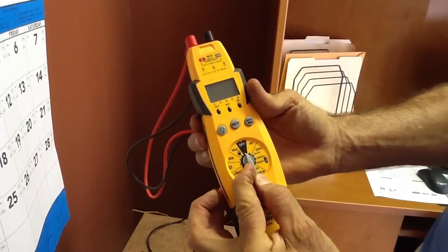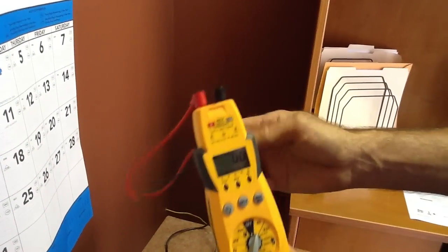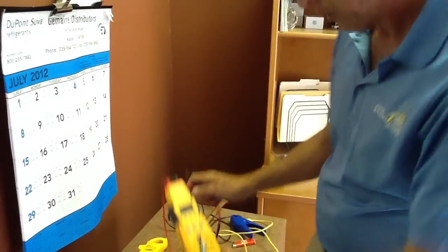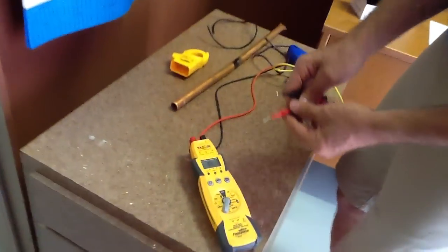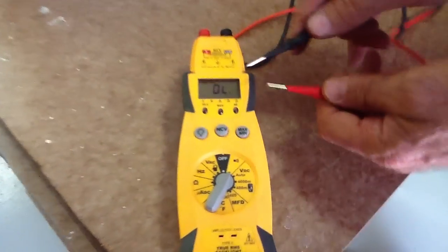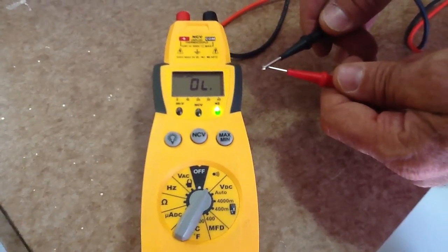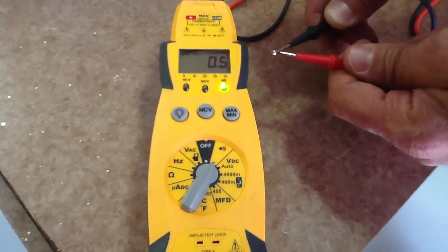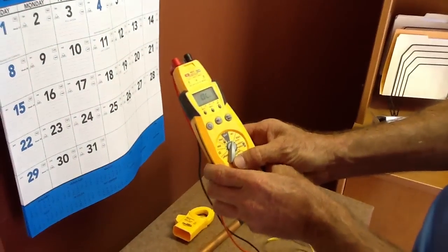So now we're going to talk about this is off, this here is the audible sound. This is when you have continuity. So what we're going to do here, we're going to put the leads together. I want you to look at this. Now once you look, hear that sound? That means we have continuity. That's all that means.